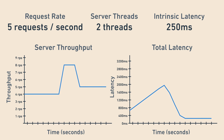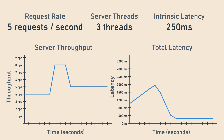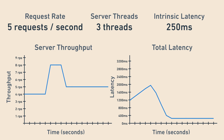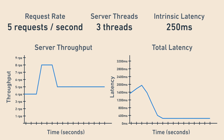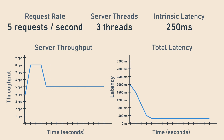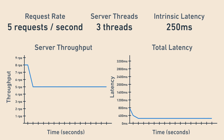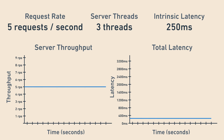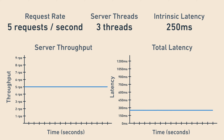What if we increase the number of threads from two to three? Well, nothing changes. Max throughput is now 12 requests per second, but because the request rate is just five, nothing changes. Importantly, latency also doesn't change because it still takes each request 250 milliseconds to be processed. This is an important rule: increasing request processing capacity does not affect intrinsic latency. This is sometimes referenced with the adage, 'nine pregnant women cannot produce a baby in one month.'